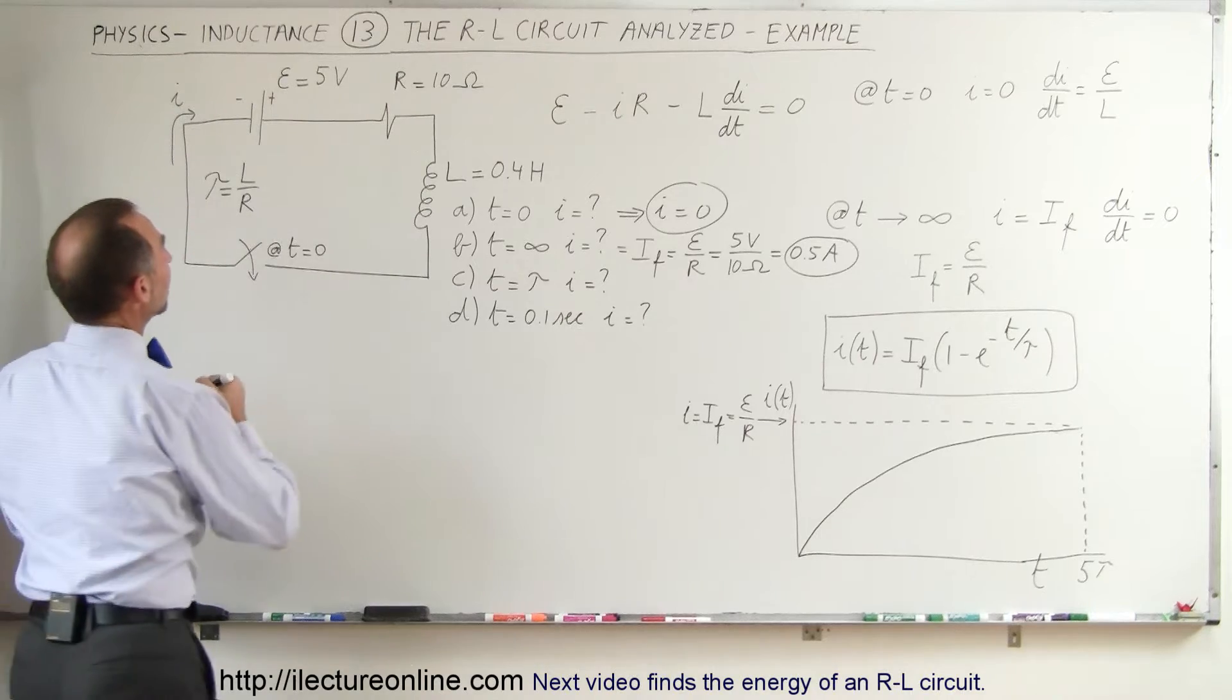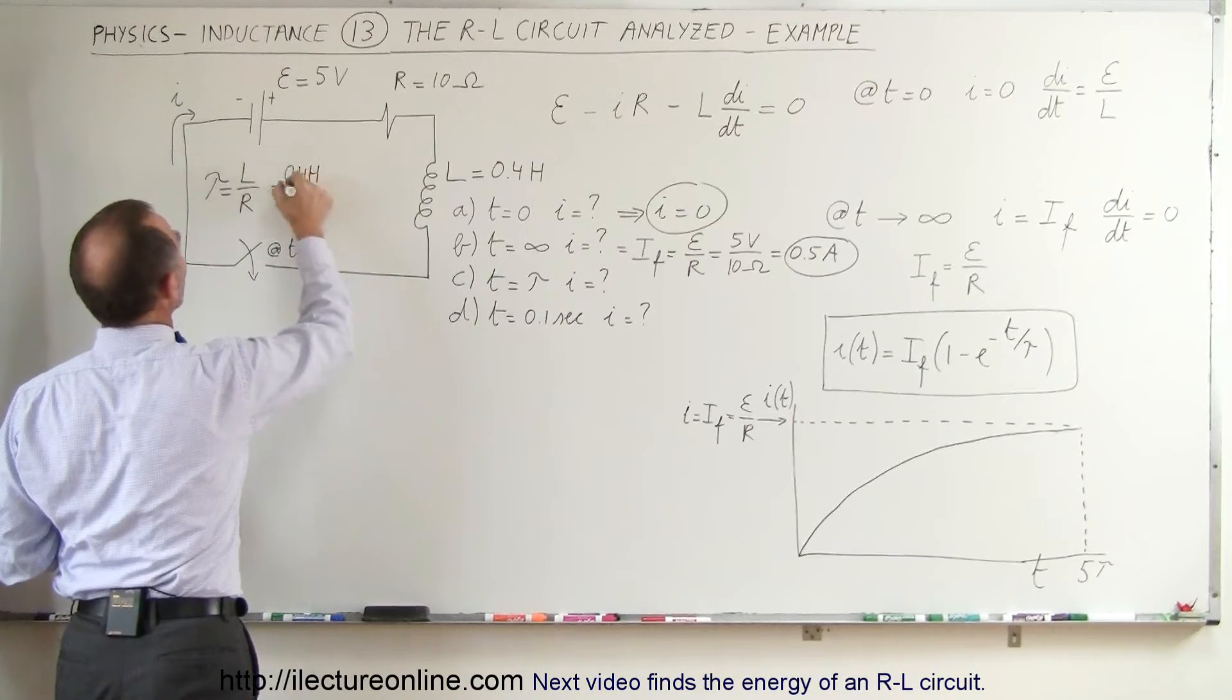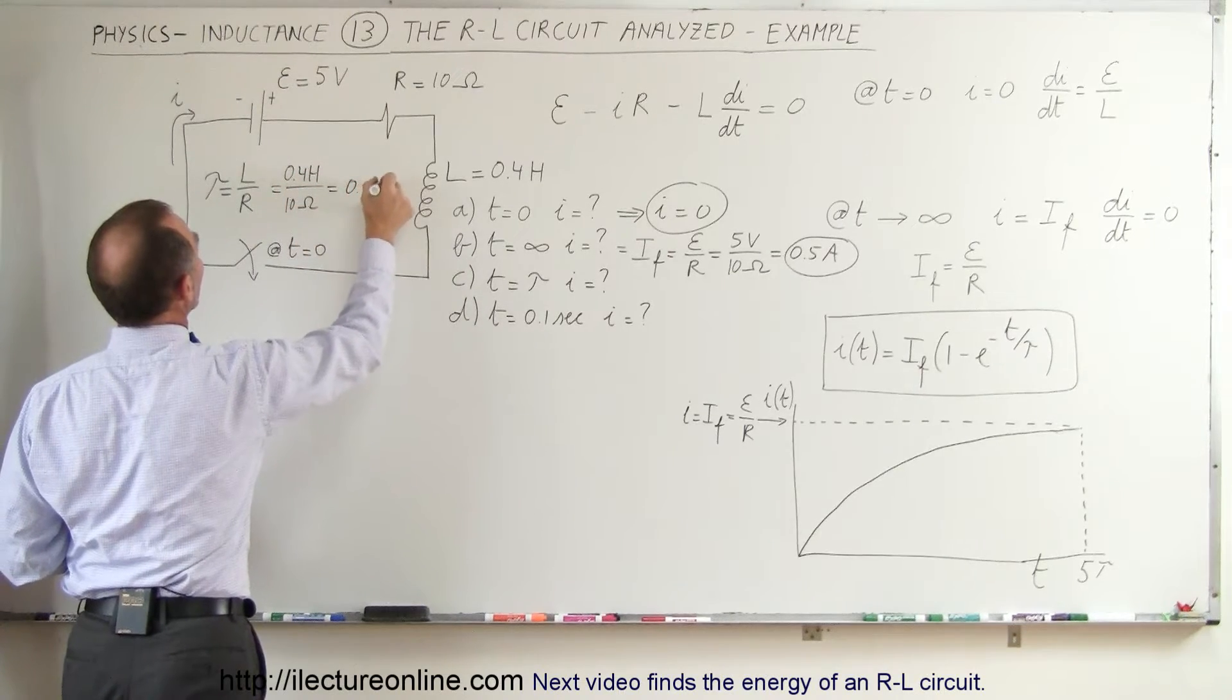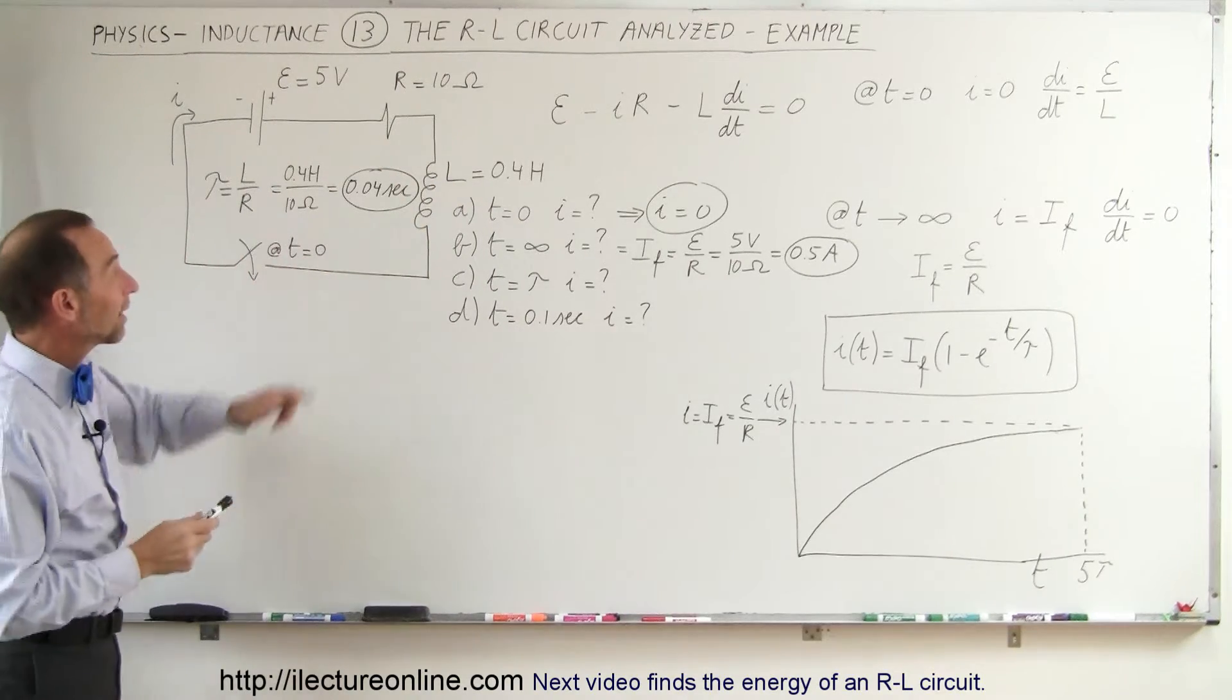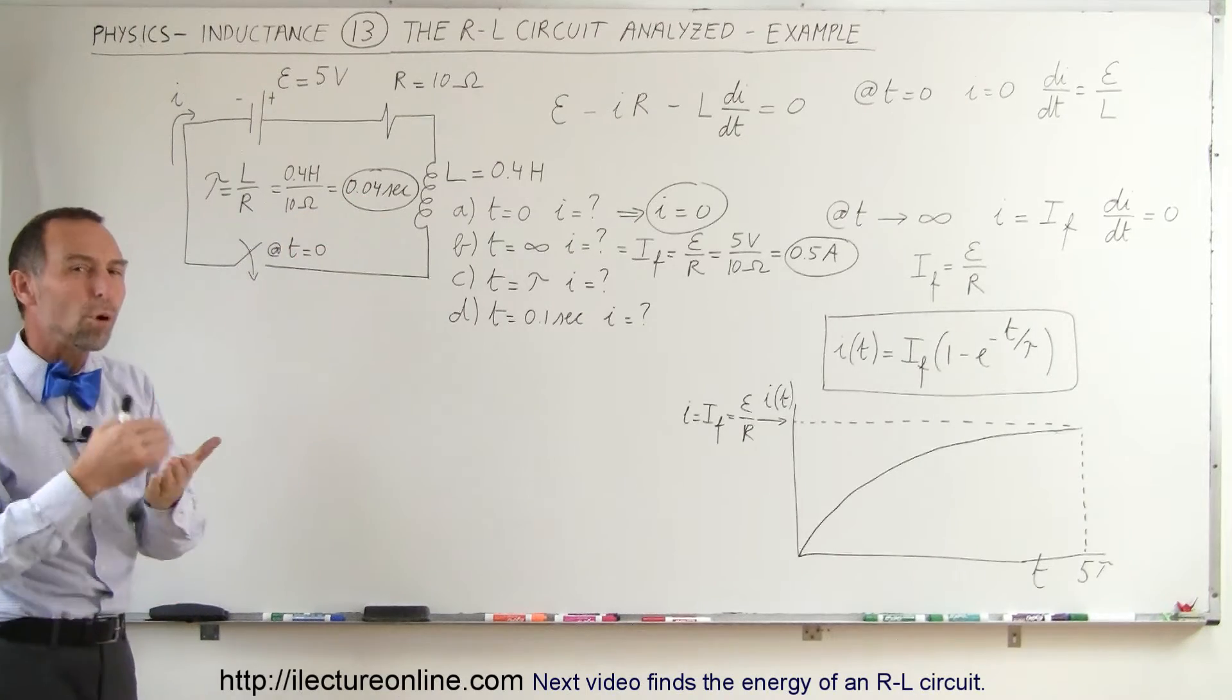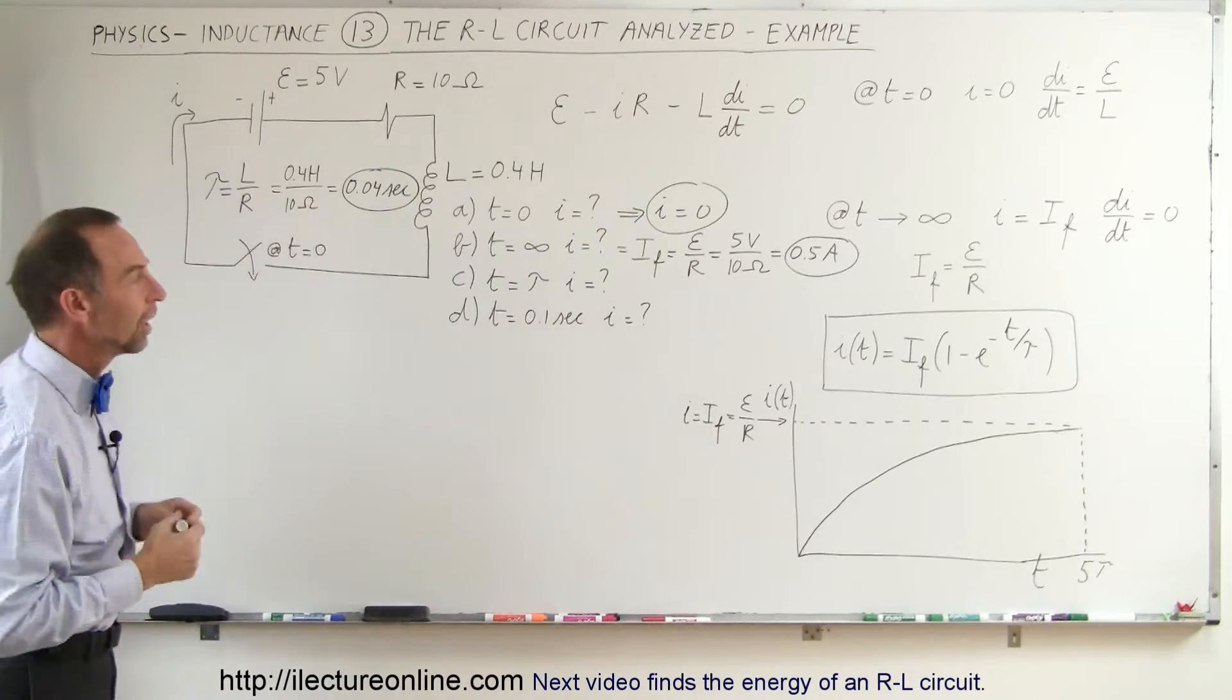So in this case, since L is equal to 0.4 Henrys, we get 0.4 Henrys divided by 10 ohms. That means it's 0.04 seconds, in this case, is the time constant. If we multiply it times 5, 5 times 0.04 is 0.2. That means after 0.2 seconds, we've pretty well reached the final value of the current.